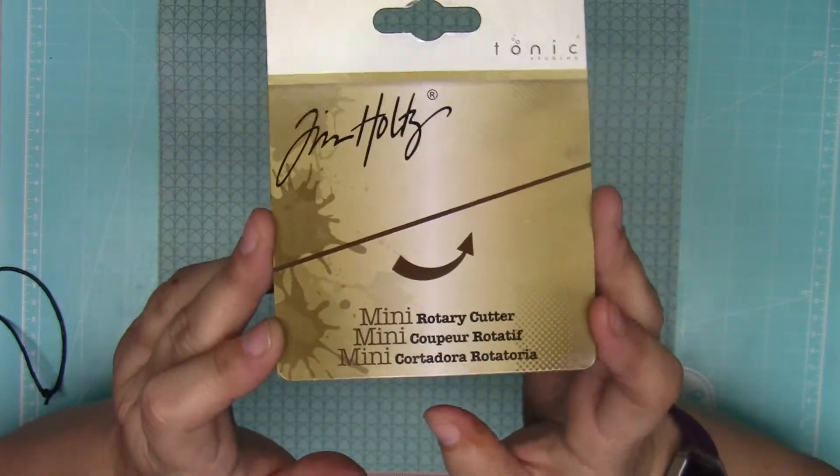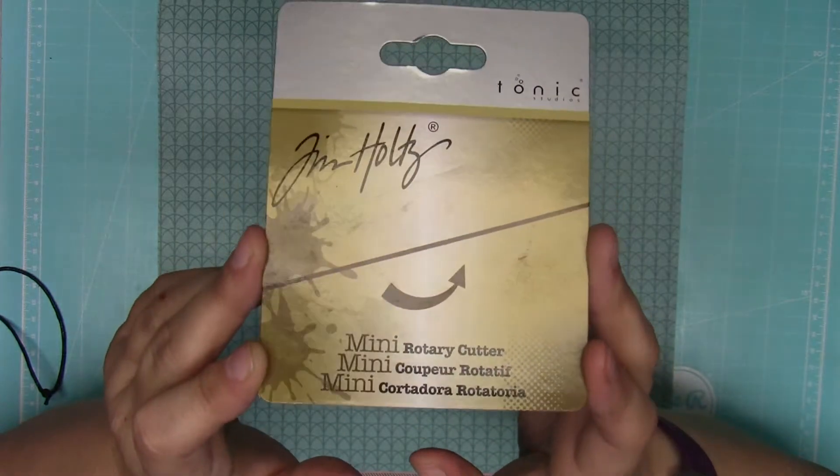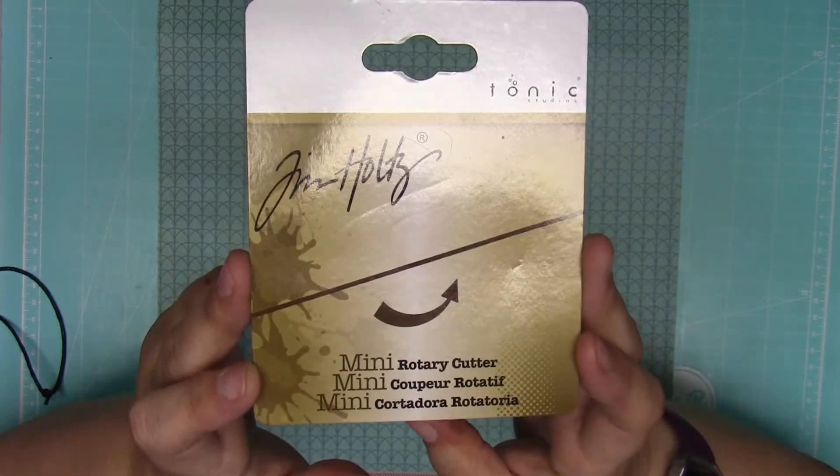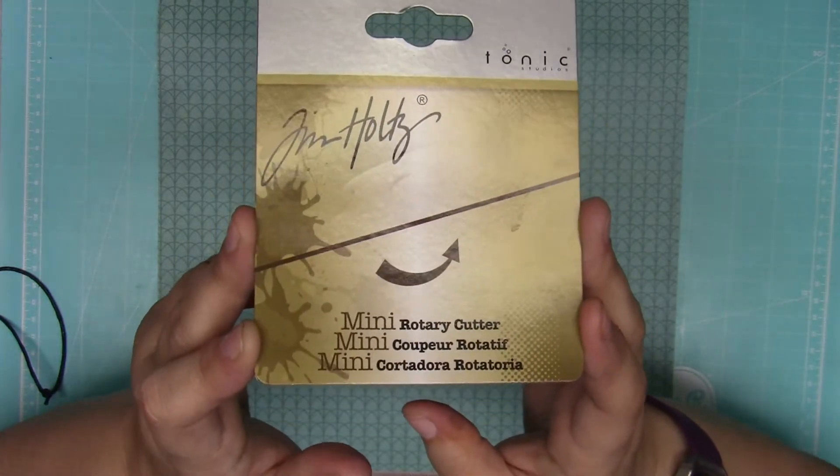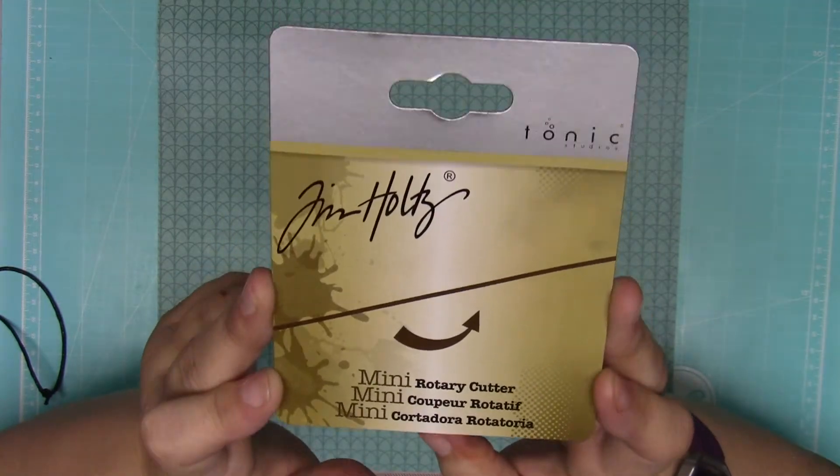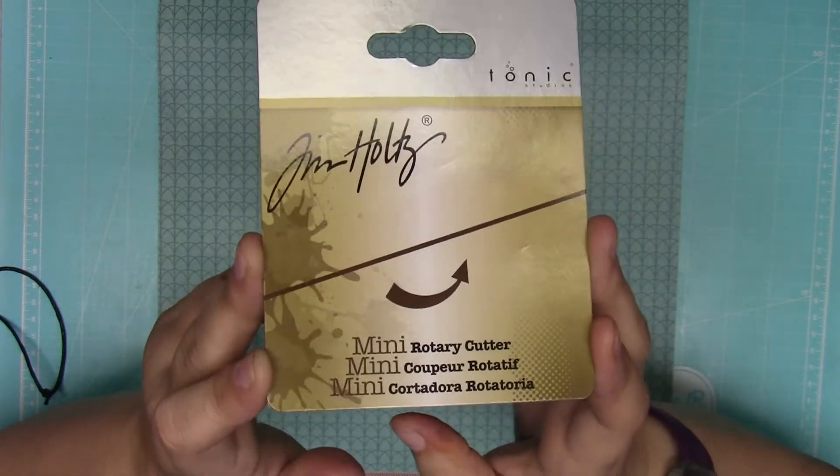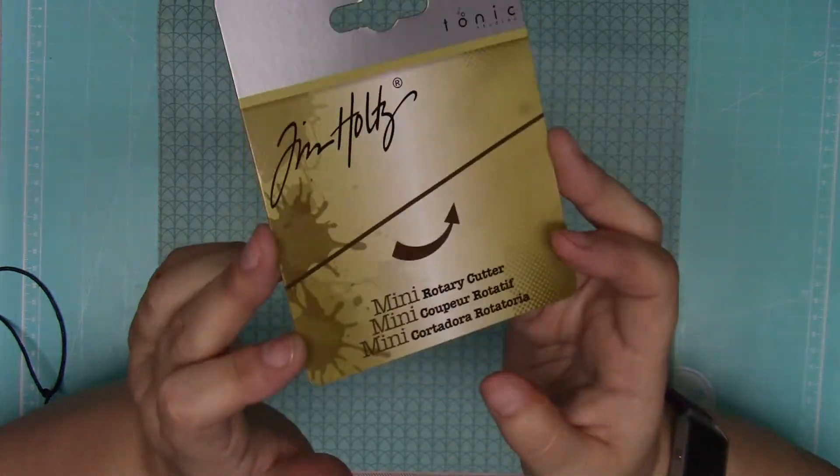I usually know what Tim Holtz and Tonic have coming up because they're some of my favorite tools, but I missed it. It is called the mini rotary cutter. It's by Tim Holtz, looks like this in the package. I think it was five or six dollars, relatively inexpensive.